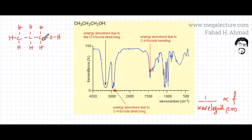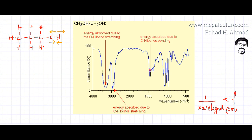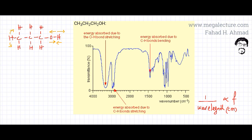If you look at this propan-1-ol molecule, you will notice that there are many different bonds, and those bonds would be stretching, contracting, and vibrating to and fro. For example, this OH bond might be stretching and contracting, so it would be absorbing frequencies from the infrared spectrum. On this chart, this absorption here is given as the energy absorbed due to the OH bond stretching or contracting — these are the frequencies absorbed by this bond.